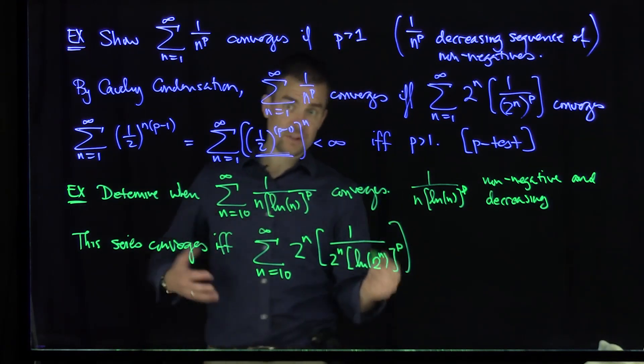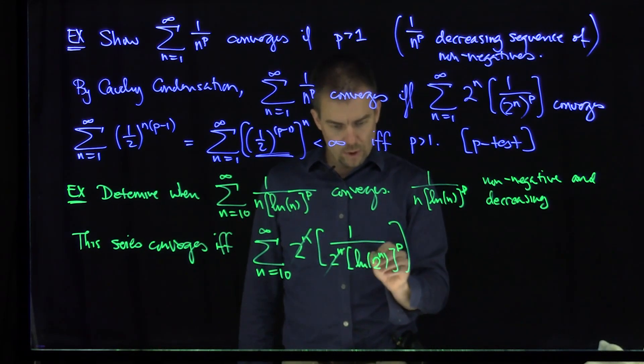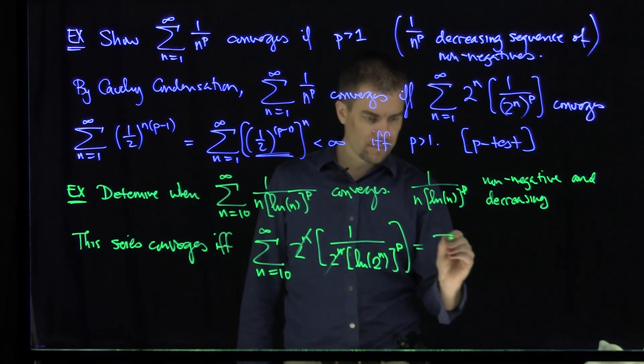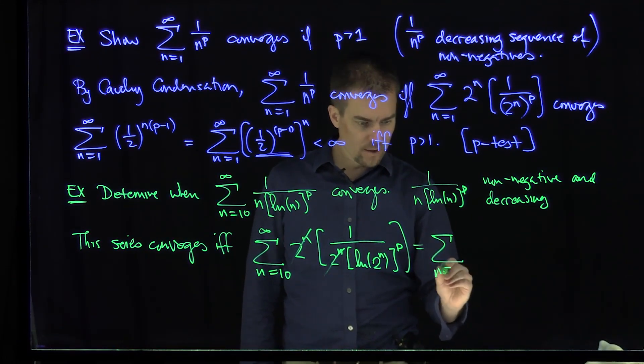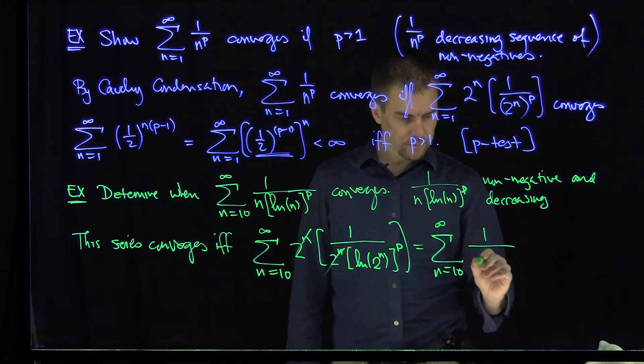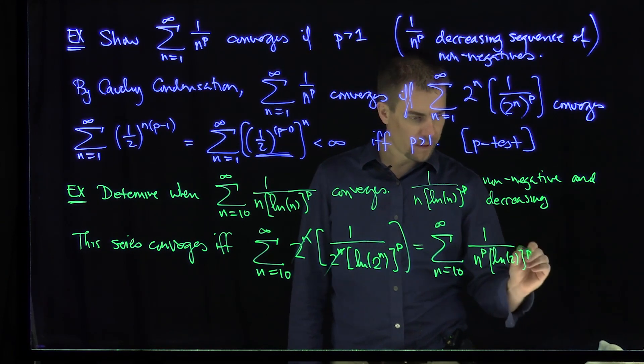Now this is beautiful because you can see the power of Cauchy, the 2 to the power n of the dyadic powers cancel out. And you're just left with this log base 2 to the power n. I can pull that n out of the logarithm. So this is going to be the sum n goes from 10 to infinity of the sum n goes from the power n to the power n to the power p.